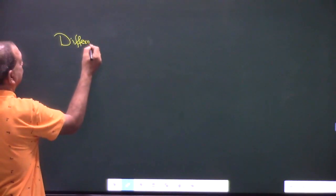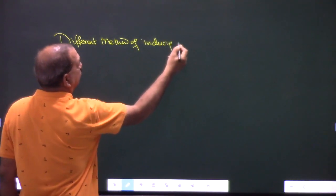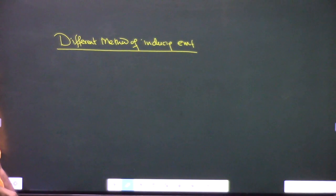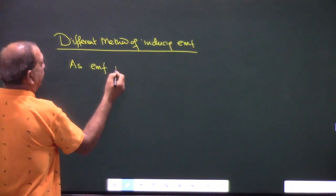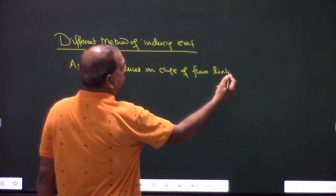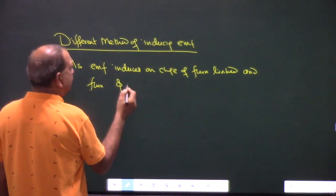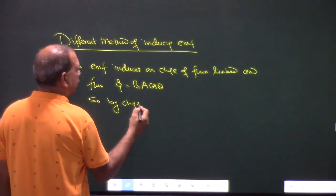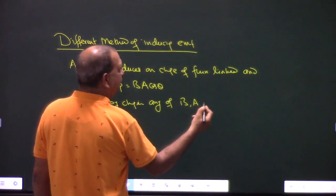Different methods of inducing EMF. EMF is induced on change of flux. Flux phi equals B·A·cos theta. So EMF can be induced by changing any of B, A, or theta.